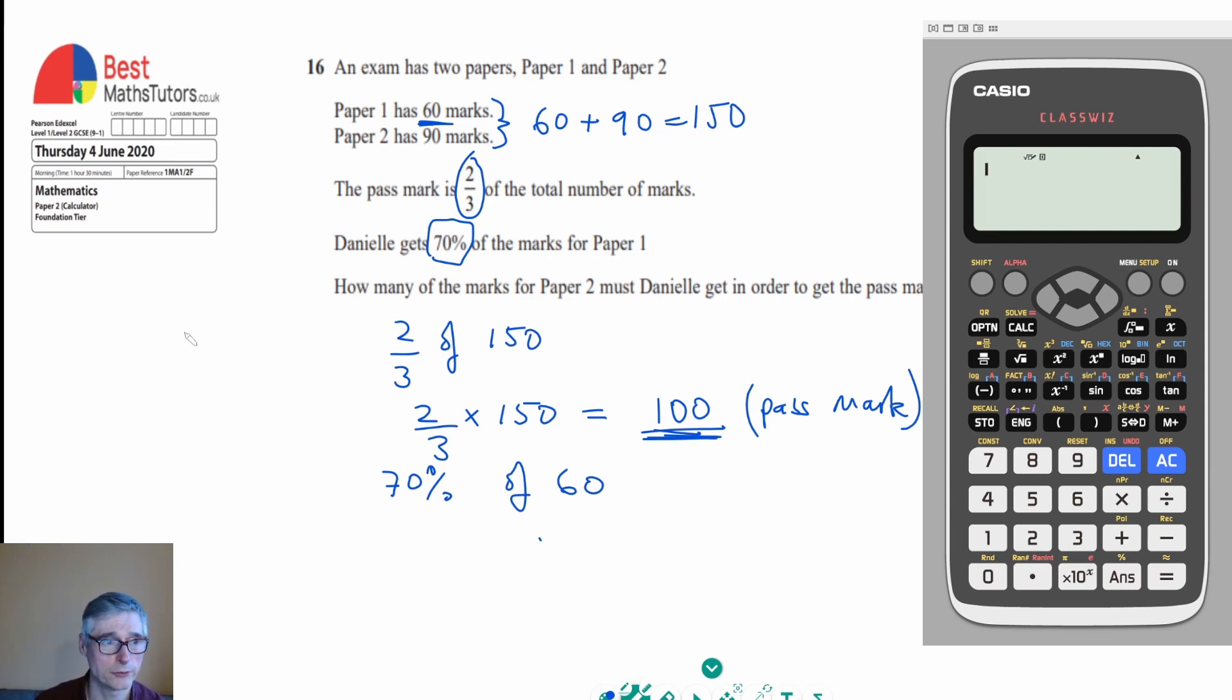And for this, I'm just going to use the calculator. Simple reason for that is we're on the calculator paper. So we don't really want to be taking any chances if we're doing this in an exam. We want to use the calculator. So to do that, 70% is actually 0.7. So we can just go 0.7 times 60. And if I do that on the calculator, what I get is 42.